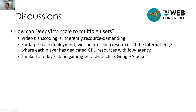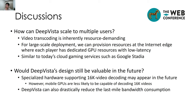There are some discussions to share. The first question is how DeepVista can scale to multiple users. Video transcoding is inherently resource-demanding. For large-scale deployment, we can provision resources at the internet edge where each player has dedicated GPU resources with low latency, similar to today's cloud gaming services such as Google Stadia. Another question is whether DeepVista's design will still be valuable in the future. We think yes: first, even with specialized hardware supporting 16K decoding, mobile devices are less likely to be capable; and second, DeepVista can drastically reduce last-mile bandwidth consumption, which is quite valuable.